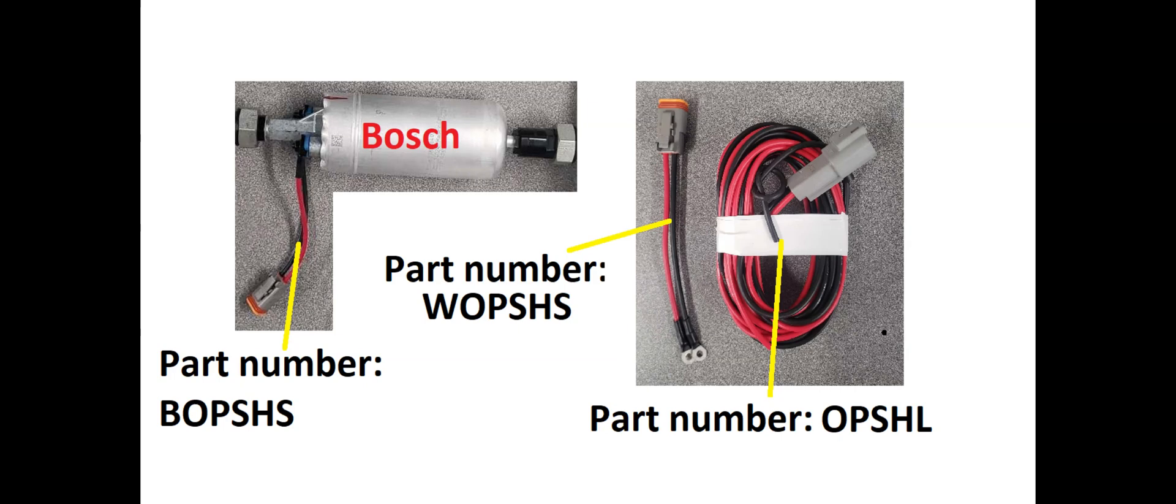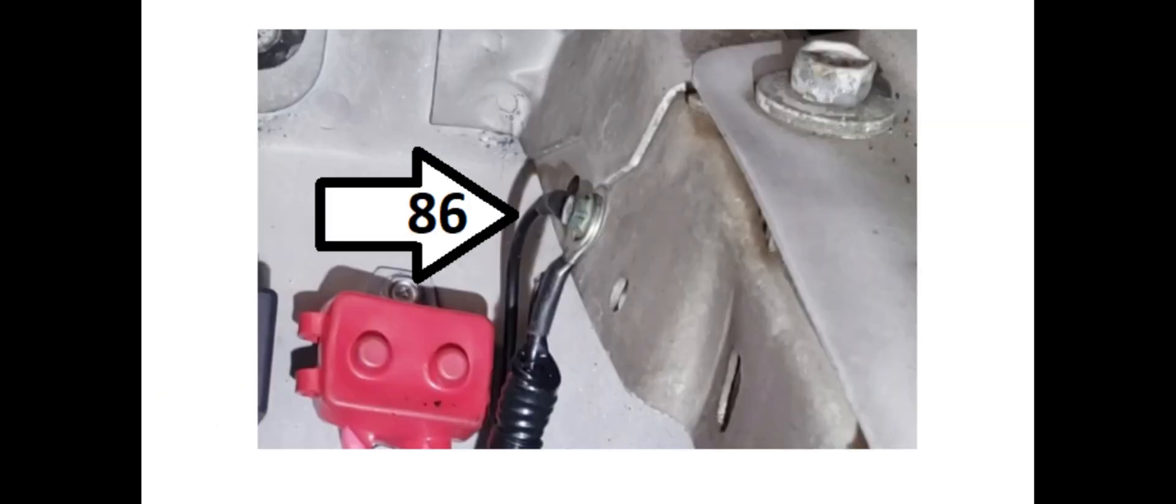The two short harnesses are pump specific. B stands for Bosch and W stands for Walbro. The longer harness pictured here will work with both. The red wire on all three harnesses represents the 85 leg and the black wire needs to be routed to a ground location. We typically attach it to the same bolt we use to ground the 86 leg on the relay.